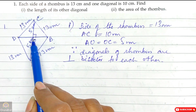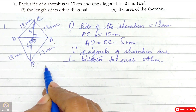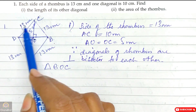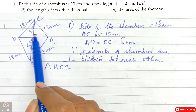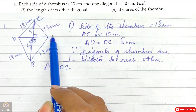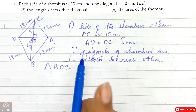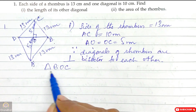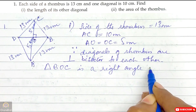Now we need to find O, B — that is, the other diagonal B, D. We will consider triangle B, O, C. In this triangle, the angle at O is 90 degrees, O, B is the base, O, C is the height, and B, C is the longest side — the hypotenuse. So triangle B, O, C is a right angle triangle and we will apply Pythagoras theorem.